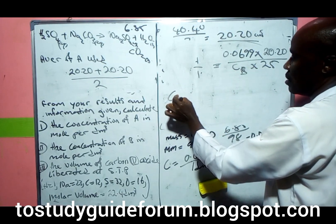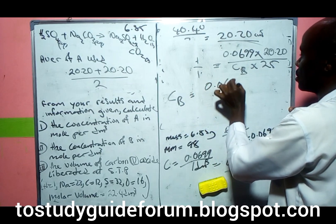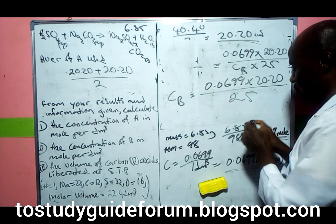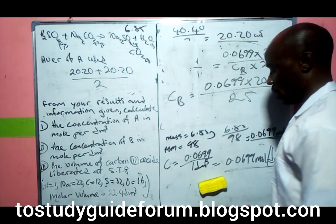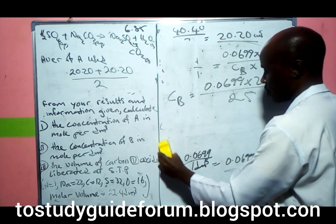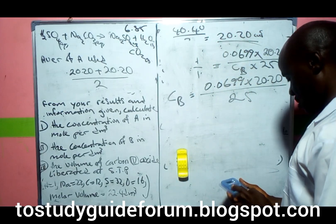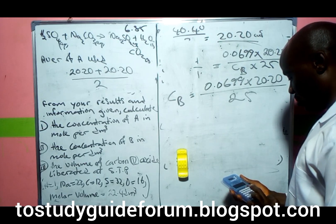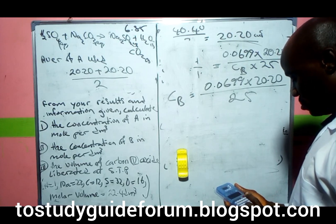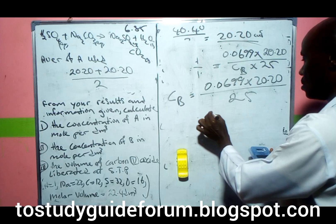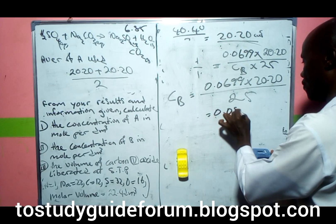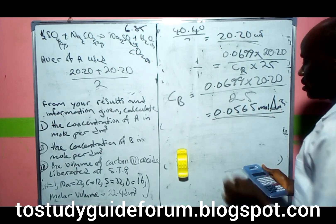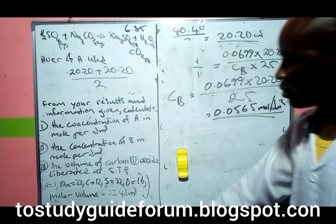Cross multiplying, CB equals 0.0699 times 20.20 all over 25. When we divide through, we get 0.0565 mol per dm³. That's the concentration of B in mol per dm³.